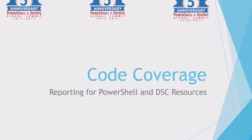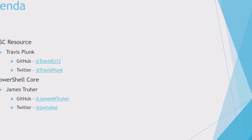We'll start right on time. We're going to hear two stories, two different areas. We're going to talk about code coverage with DSC resources, and Travis is going to speak about that — he's been on the team. And I'm going to talk about our path to getting code coverage in PowerShell Core. Travis will talk about DSC first, then I'll follow up with the PowerShell Core code coverage tools that we've built.